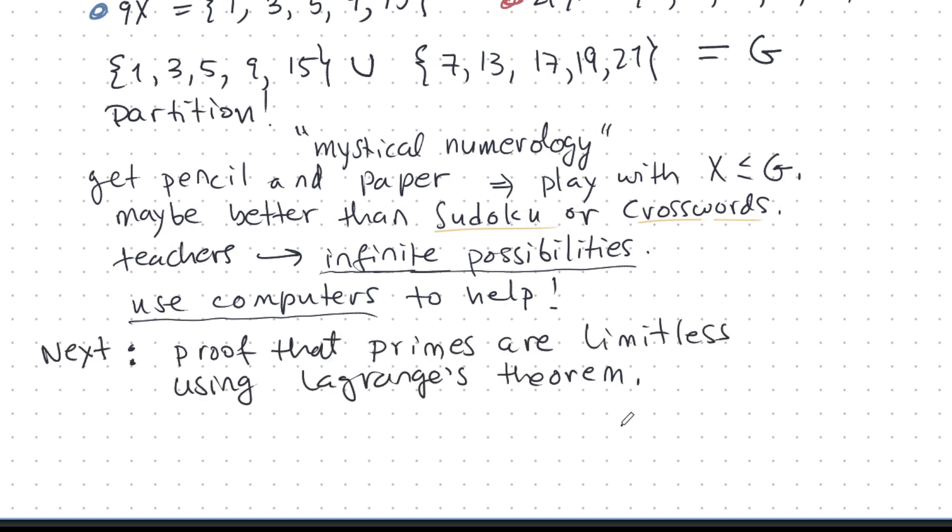And coming up next, in the next video, I will prove that the primes are limitless. There's an infinite number of primes. There's many ways to prove that. We've used several ways already. But I'm going to do this now by Lagrange's theorem, by group theory. And I'm sure that most of you have never seen this proof. So, it's going to be really amazing.